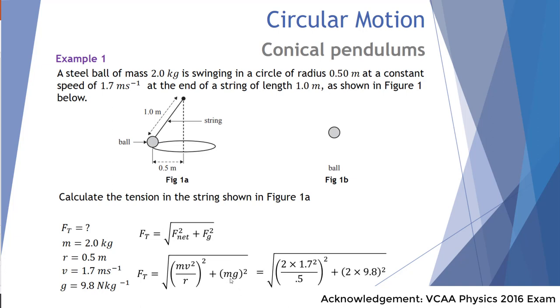Let's now sub in some values. So the mass was 2, the speed was 1.7 m/s, that's squared, divided by the radius of 0.5 and that's all squared, plus 2 times the gravitational field strength of 9.8 in brackets squared. Multiply those through and we end up with a net force of the tension of 23 newtons. Good work.